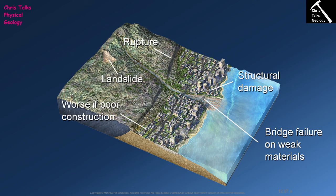The next risk associated with earthquakes is liquefaction of fill. Liquefaction occurs when you have a clastic sediment which is waterlogged — it contains the maximum amount of water possible in the pore spaces between the clasts. Under normal circumstances the sediment appears solid, because the clasts are in direct contact with each other. If you apply a force to the sediment, the clasts push against each other, offering resistance, so the sediment feels quite hard and firm.